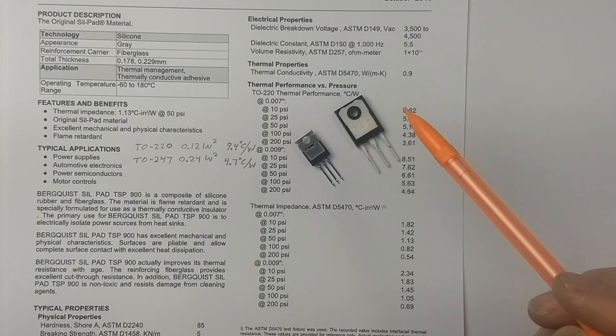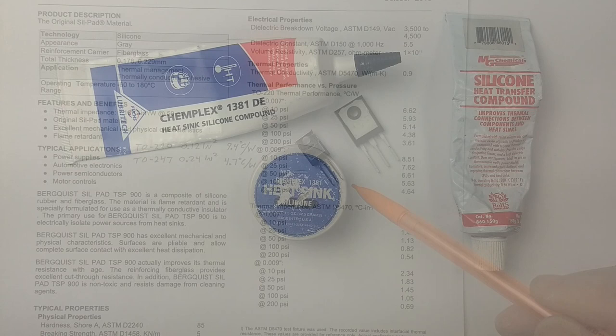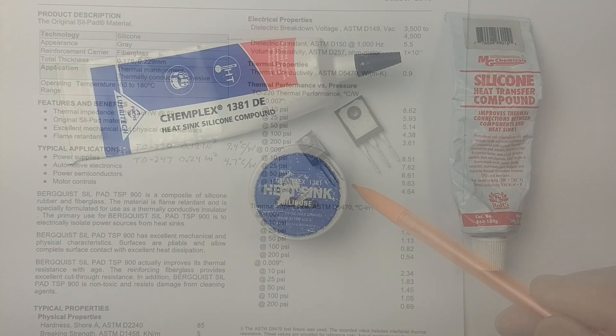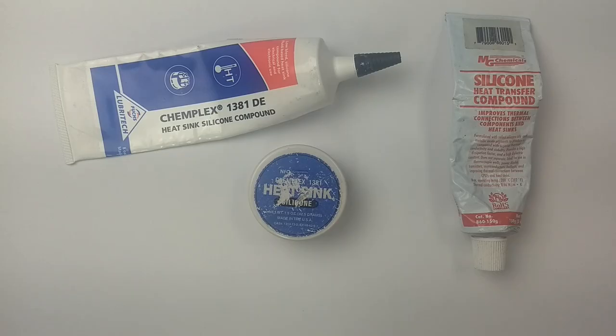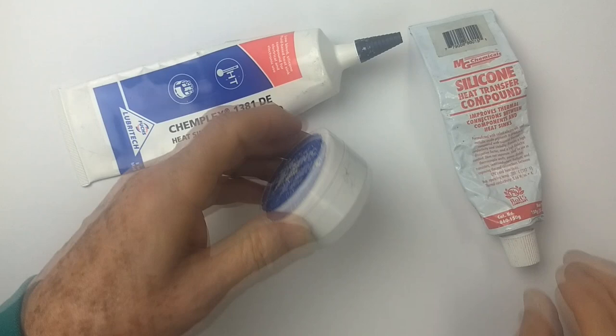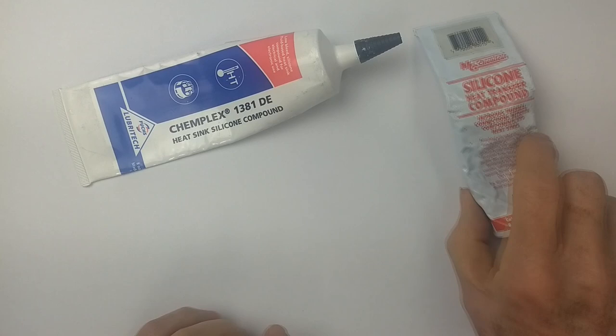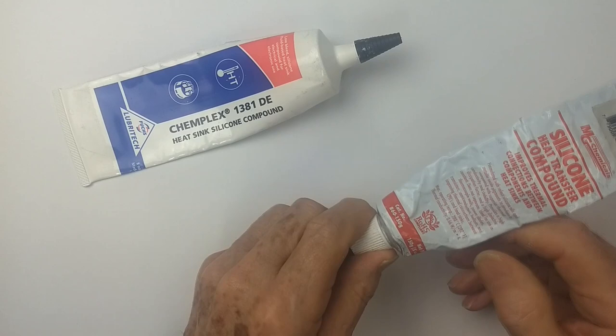There are many brands of heat sink compound, and some come in tubes, and some come in little jars. And the temptation is to use too much of this stuff, so let me show you how to apply it.